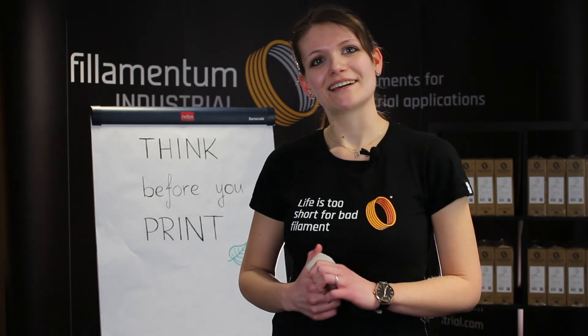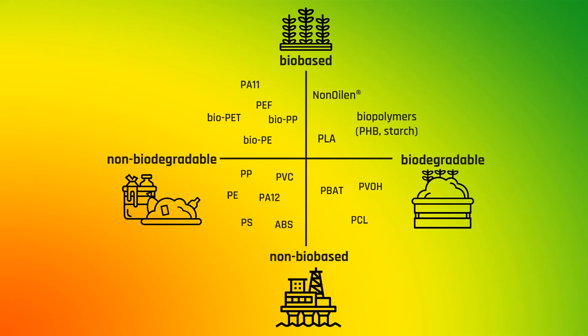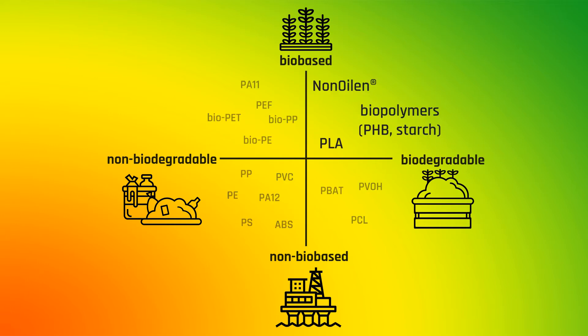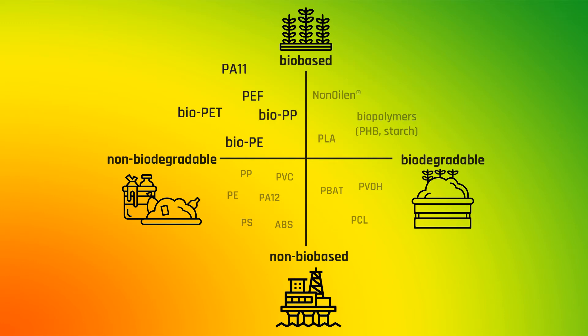If we look at the picture, we can see that the best group of these materials is in the top right. A slightly worse group is top left because it helps minimize fossil resources, but those materials can't be degraded in compost. Because we need to return to nature what we have taken from it, and that is not fulfilled.